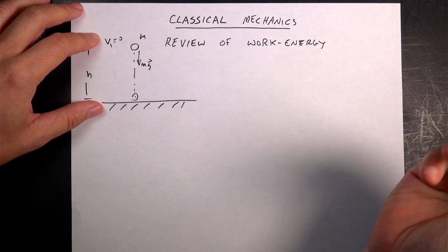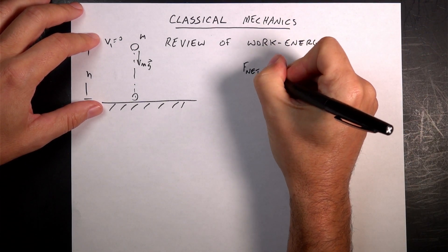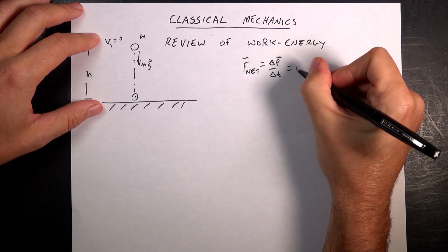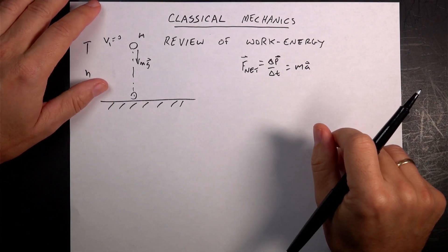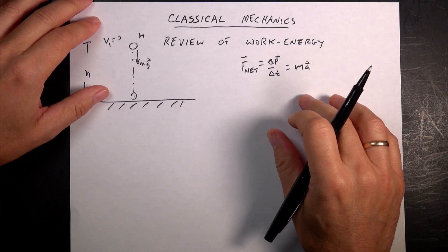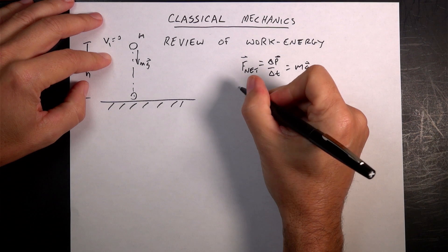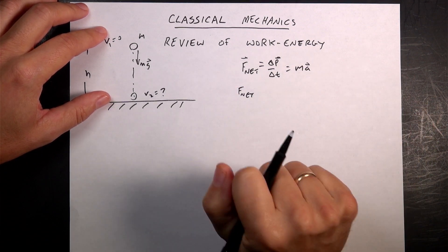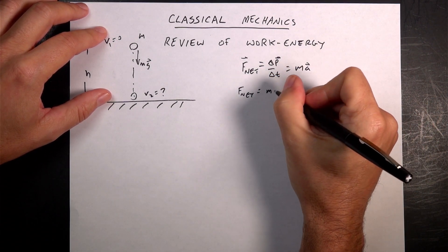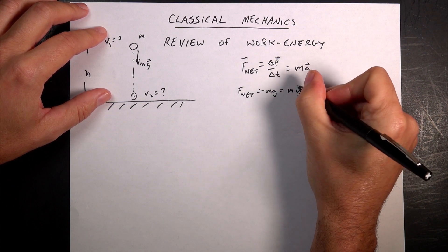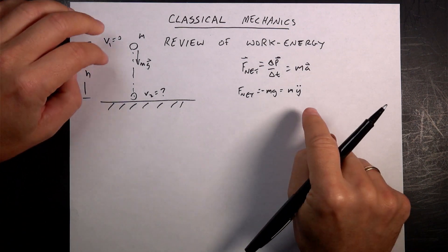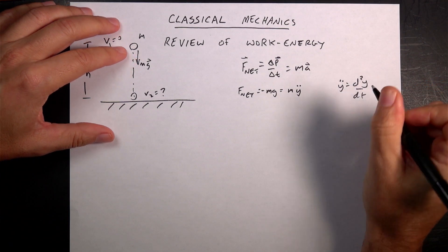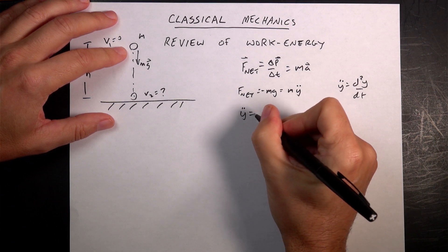We have two approaches: the momentum principle and the work-energy principle. The momentum principle says F_net = ΔP/Δt, which is the same as ma. Let's use Newton's second law. This is a one-dimensional problem. F_net equals negative mg, which equals m times y-double-dot — the second derivative of y with respect to time. The masses cancel and we get y-double-dot equals negative g.